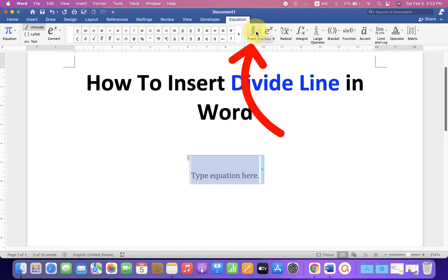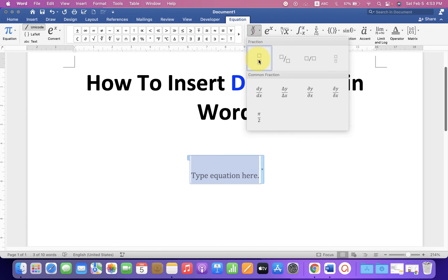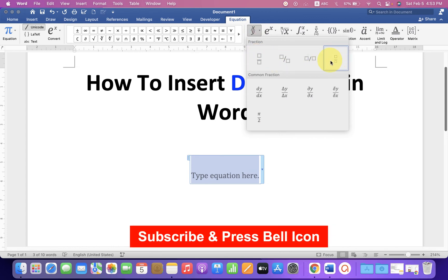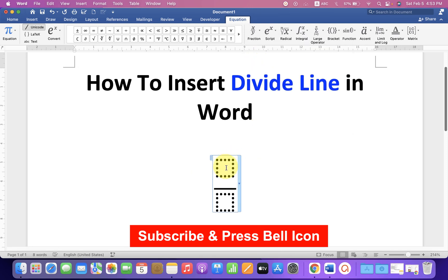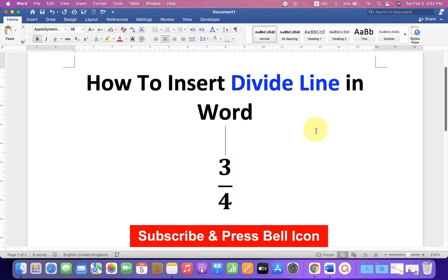Click on it and you will see many options here. You can select anyone. I will select stacked fraction. Now you can just type inside the boxes on keyboard, for example 3 by 4.